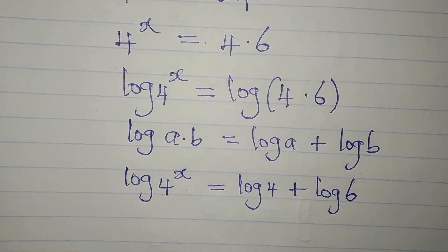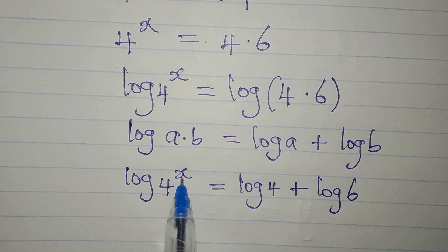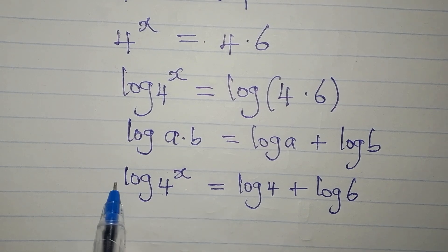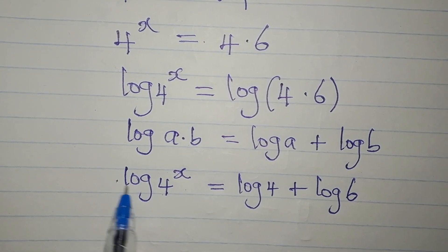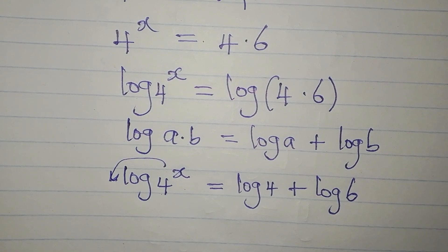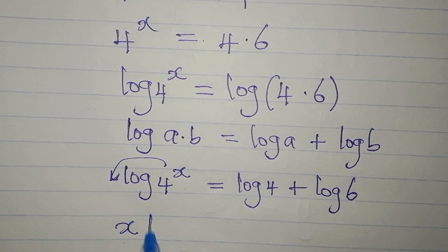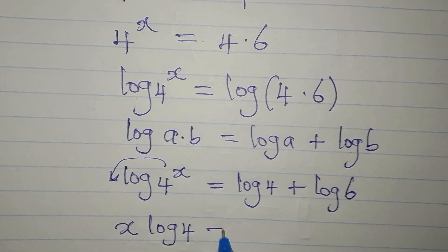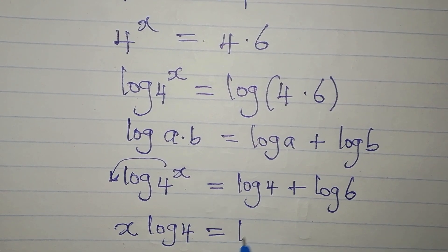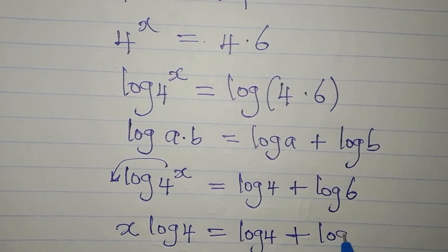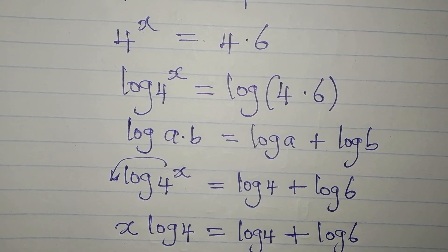If this x remains as the power we won't be able to find the value of x, so we have to bring it down — it multiplies log 4. So we'll now have x times log 4, and it's equal to log 4 plus log 6.